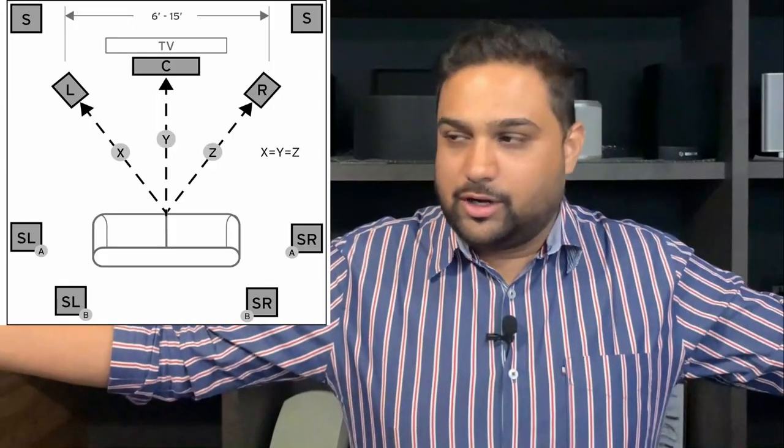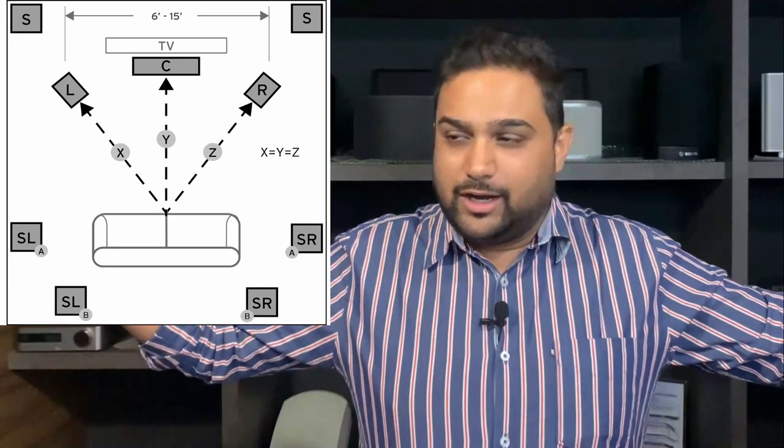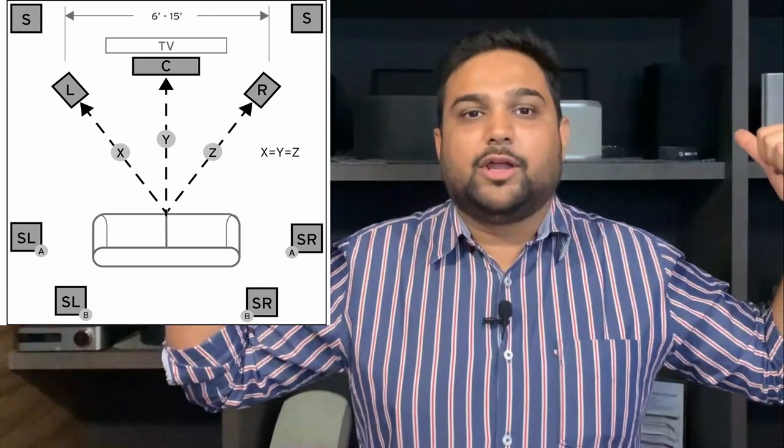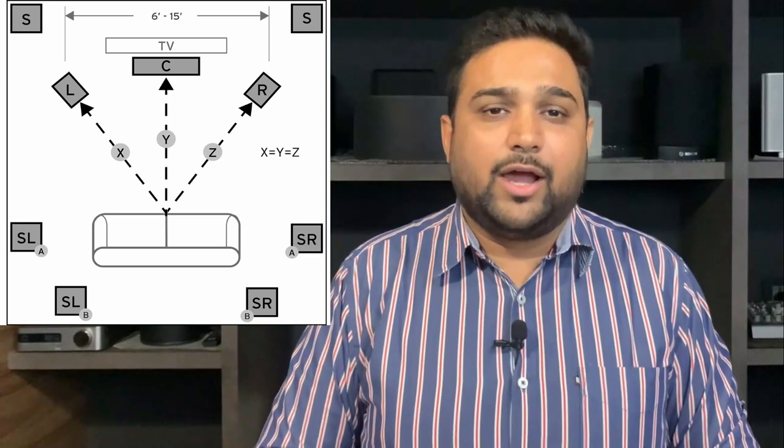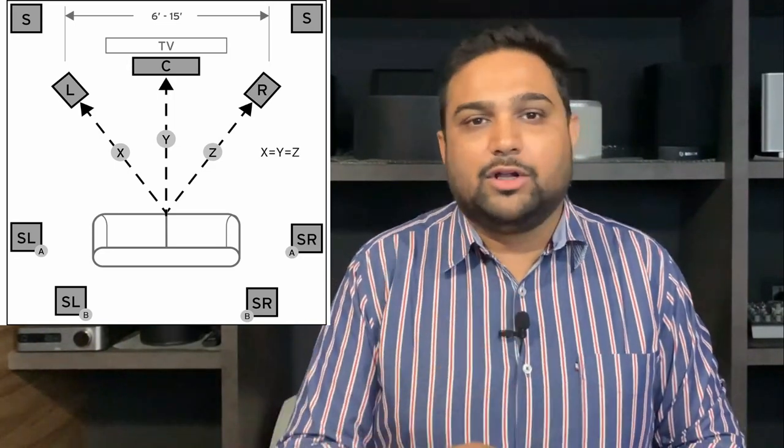Now let's jump to the surround speakers. For the surround speakers, there are two possible locations: on the side walls at roughly right angles to you, or on the rear wall. These are the two ideal locations. Some people also install surround speakers in the ceiling, which is okay to some extent, but having them on the side or rear walls is the preferred location.